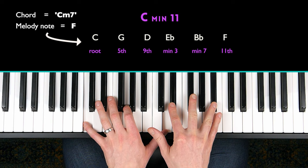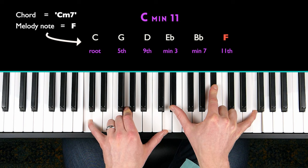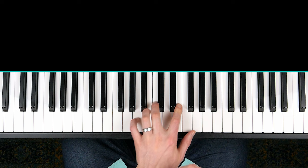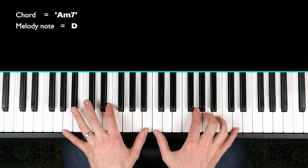For example, in the song Moon River, the second chord is an A minor seven chord, but the melody note is the 4th or the 11th. So that, for me, is my trigger to play the Kenny Barron voicing.